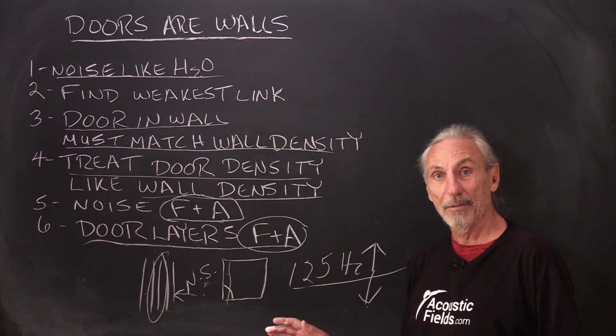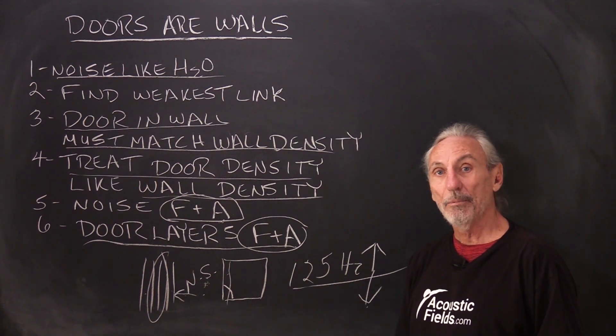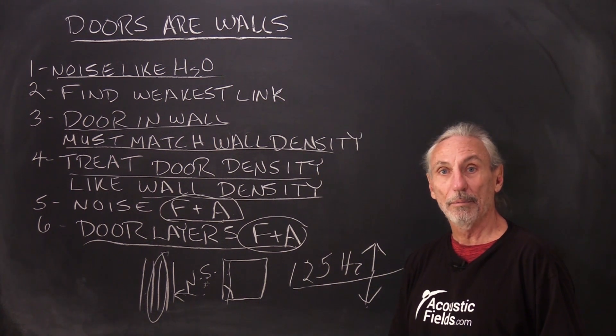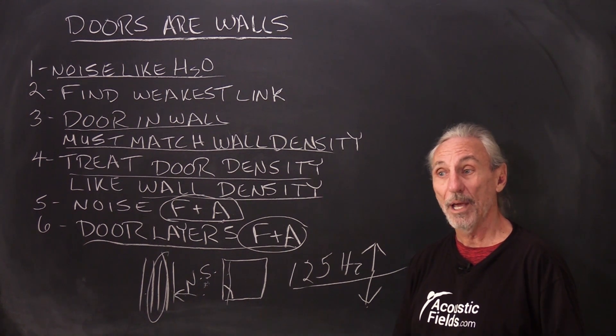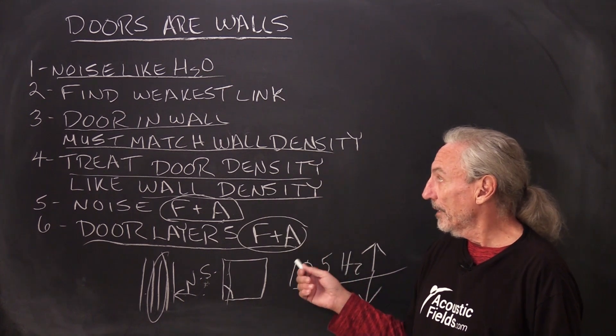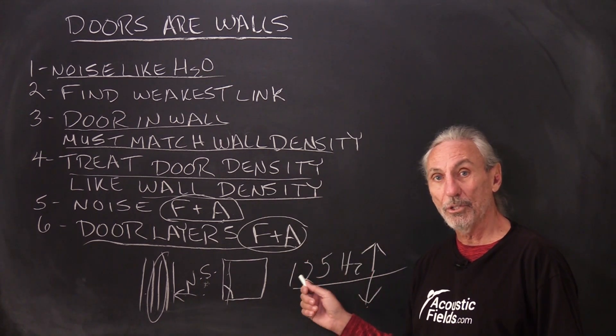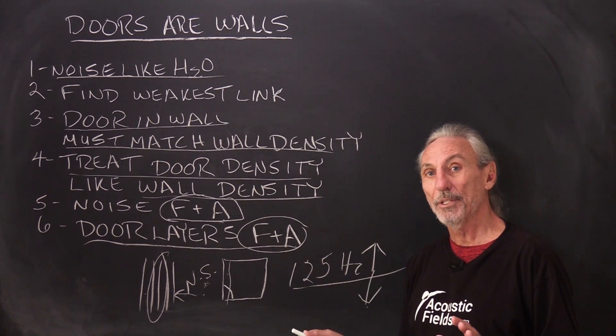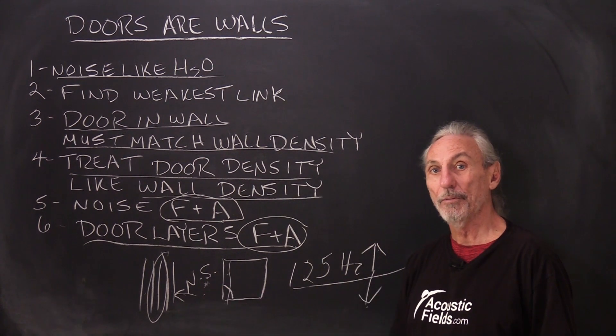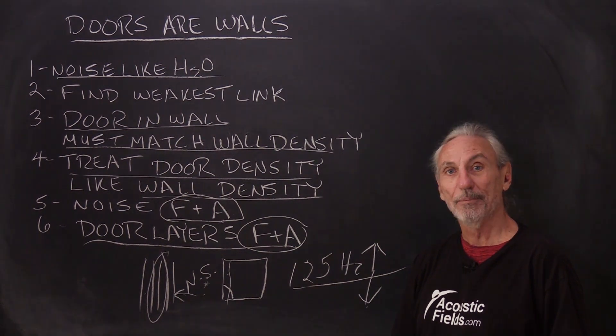We can stop anything—I mean, not completely, but we can mitigate quite a bit of noise. 90%? No problem. Well, it's a problem. It's expensive and it takes up a lot of space and it has lots of weight and mass, as you can imagine. But the bottom line here is we've got to make sure that the doors at least match the density of the wall and deal with the frequency and the amplitude of the noise. Hope this helps. Thank you.